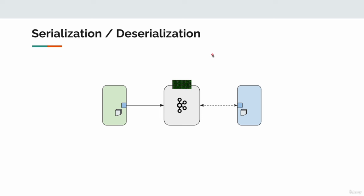Let's quickly talk about serialization and deserialization in this flow. When you give a message to the producer library, it serializes it into a byte array. When the consumer asks for messages, Kafka gives a byte array to the consumer. It is the producer's responsibility to convert the message to a byte array, and it is the consumer's responsibility to convert that byte array back to the original form. The actual message in your producer application could be a string, number, JSON, or Java objects.